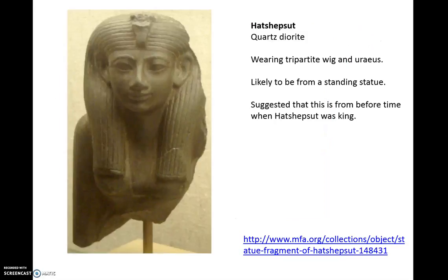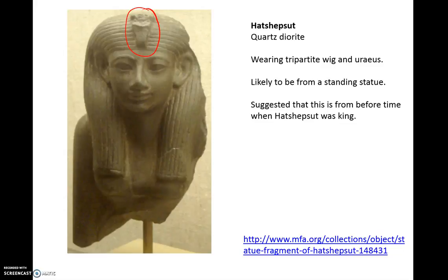This is a statue with Hatshepsut wearing what we call the tripartite wig — a typical upper-class royal hairdo for women. She would have had the uraeus, the cobra, which is a sign of royalty, not uncommon for a great royal wife to be shown with the wadjet. You can see here she looks like a woman with breasts and petite shoulders. We don't know exactly when this statue is from, but it's definitely from before she was a king — possibly when she was great royal wife, perhaps when she'd become the regent. It is showing her as a woman in the typical iconography of a queen.